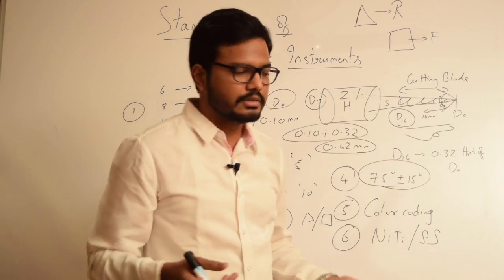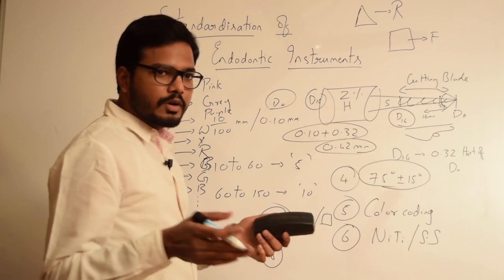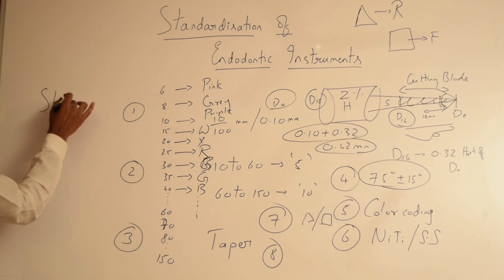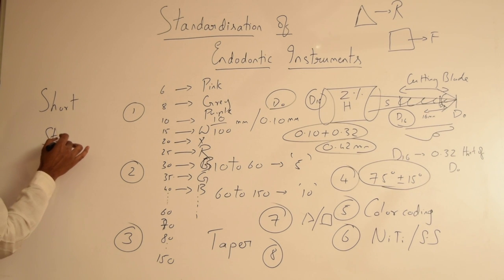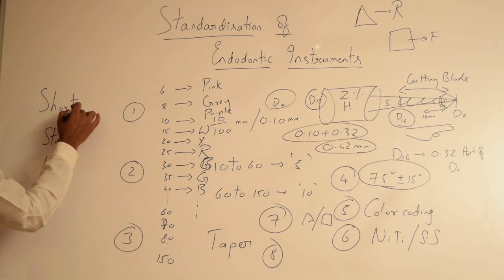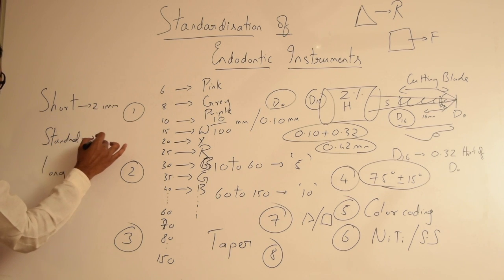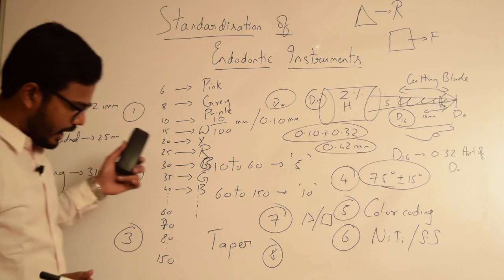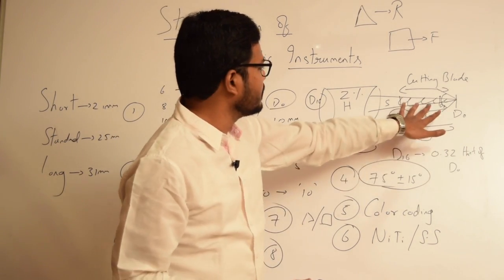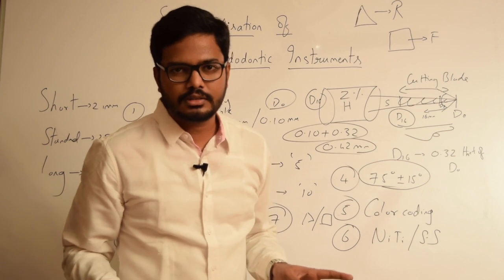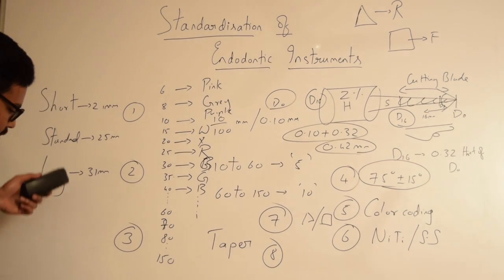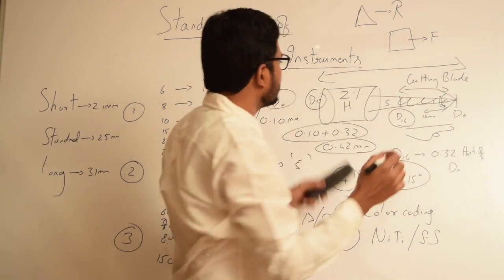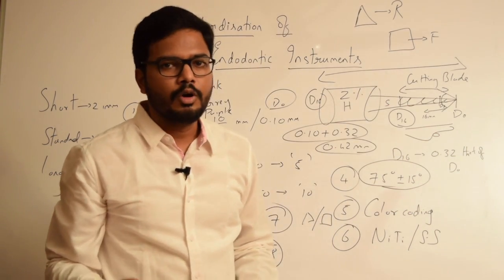The last recommendation for standardization is the lengths of instruments. We have different lengths: short instruments are 21 mm, standard instruments are 25 mm, and long instruments are 31 mm. The length indicates the overall length of the file, not just the cutting blade. The cutting blade is 16 mm in all files regardless of overall length. The overall length — from the tip towards the handle — can be 21, 25, or 31 mm.